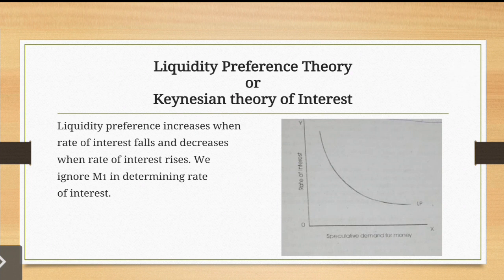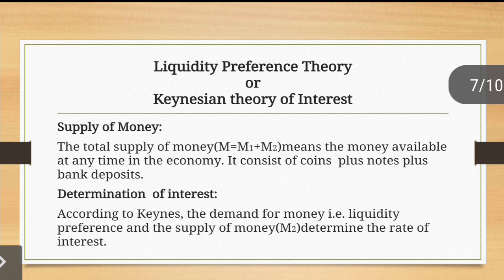Looking at the next diagram: if we keep the future rate of interest constant, then the higher the current rate of interest, the lower the speculative demand for money; and the lower the current rate of interest, the higher the speculative demand for money. Liquidity preference increases when the rate of interest falls and decreases when the rate of interest rises. We ignore M1 in determining the rate of interest.